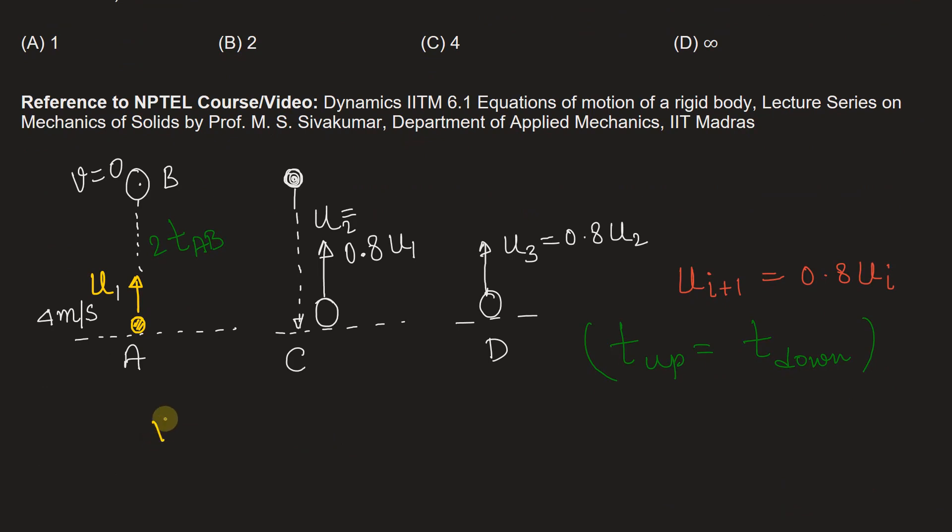Now using equation of motion, we know that final velocity is equal to initial velocity plus acceleration into time. Now in this case, acceleration is acceleration due to gravity.